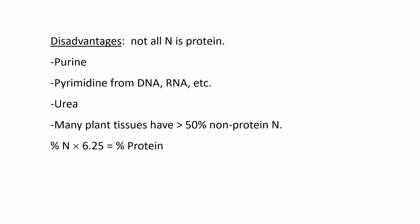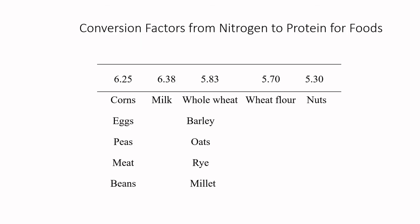Purines, pyrimidines, DNA, RNA, urea, nitrite, and nitrate can all contribute non-protein nitrogen. In the calculation of Kjeldahl or Dumas protein, we have to add a nitrogen conversion factor. The general N conversion factor is 6.25 to convert nitrogen content to protein, but that's not true of all different food products.